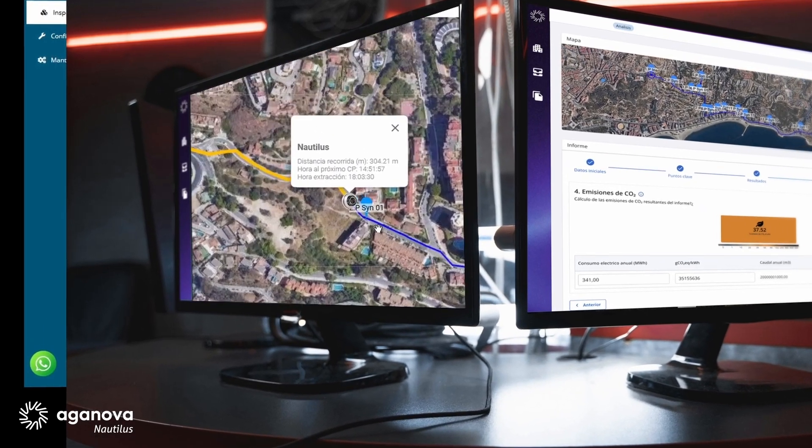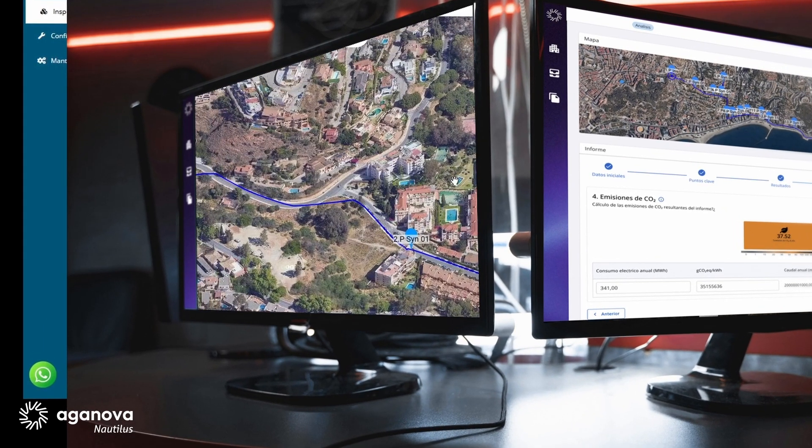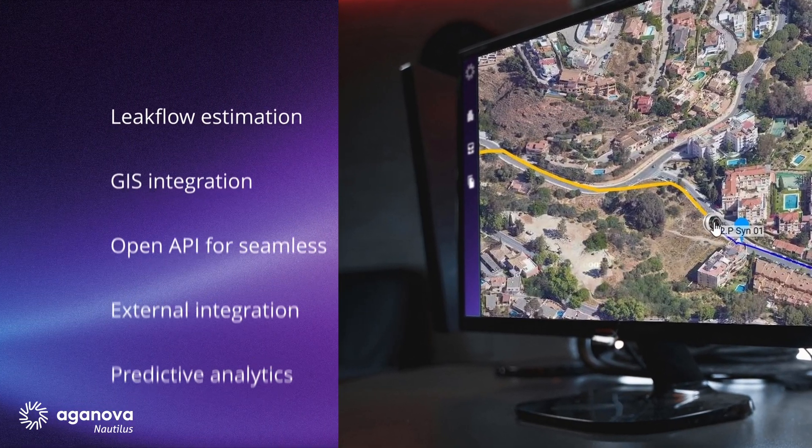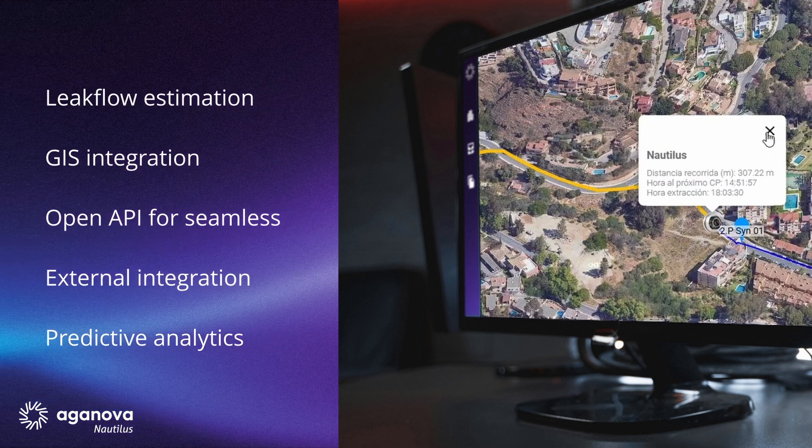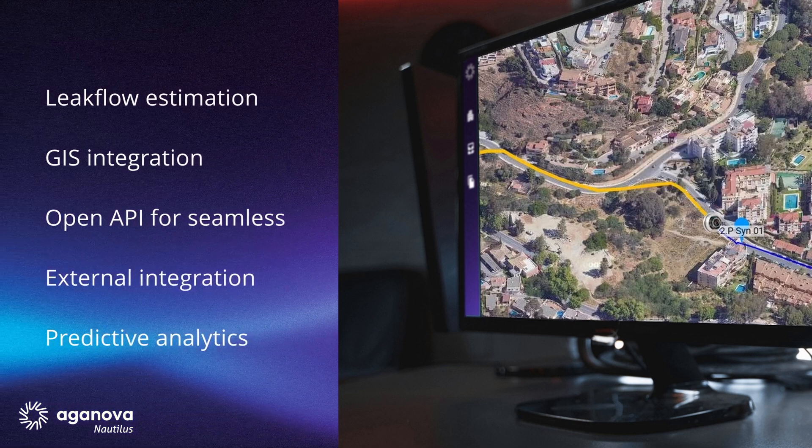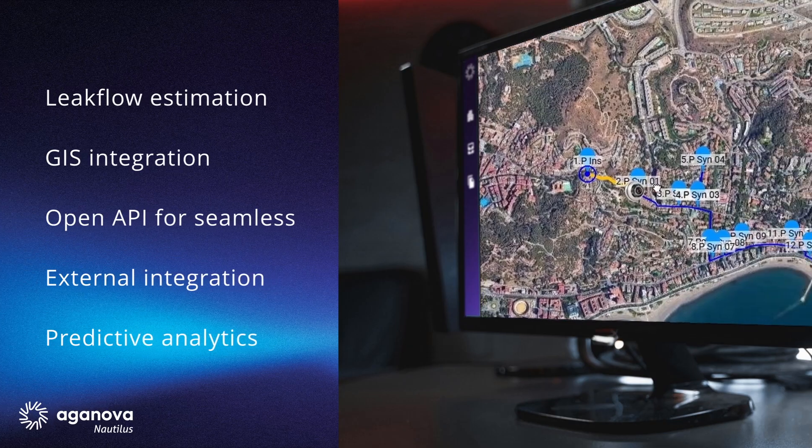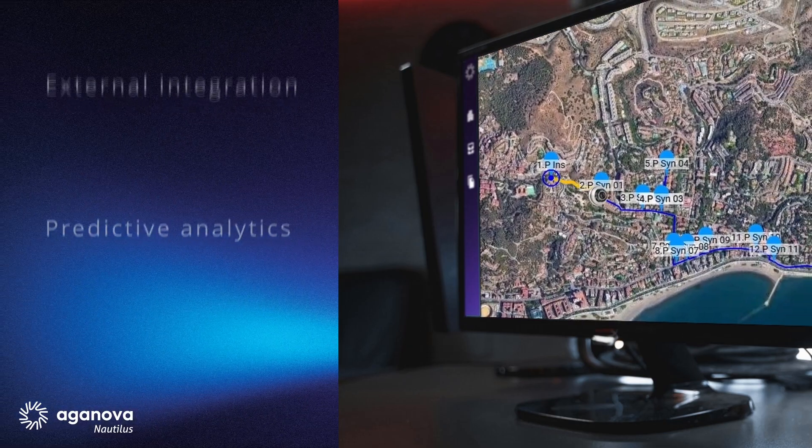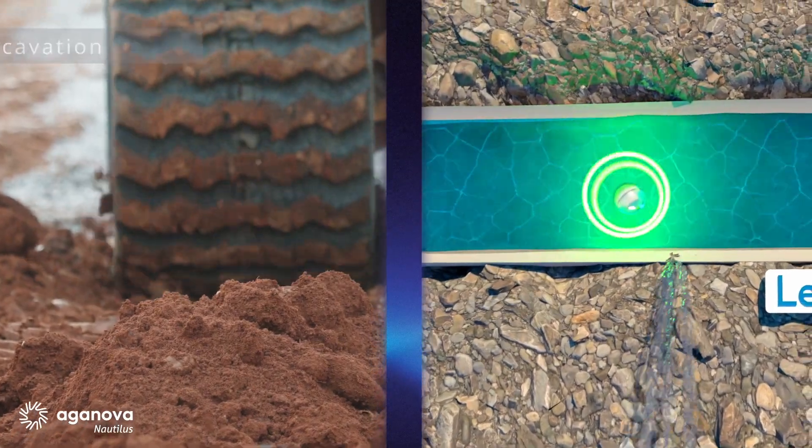NEMO generates comprehensive reports that provide detailed information on the location of leaks and their severity. Data can be exported in various formats and integrated into existing infrastructure management systems.